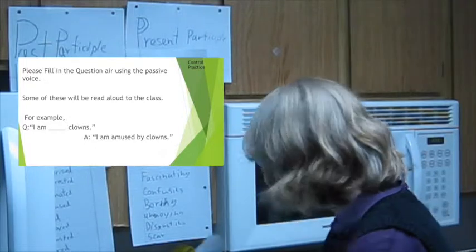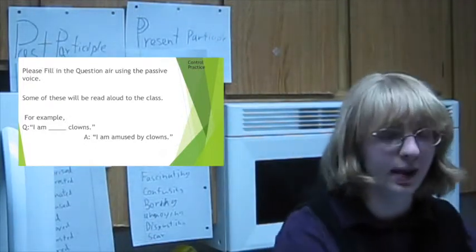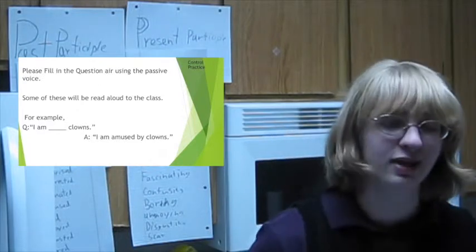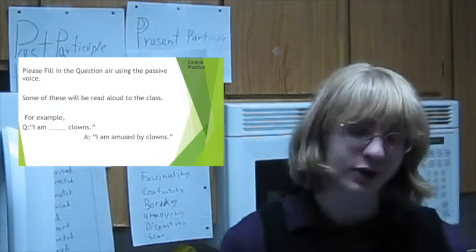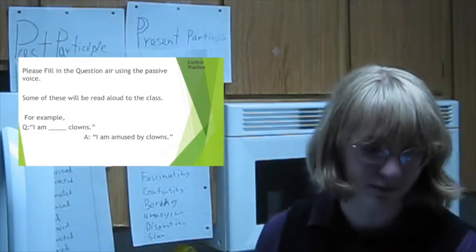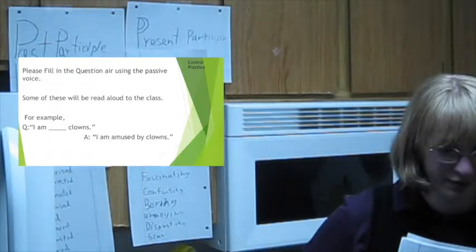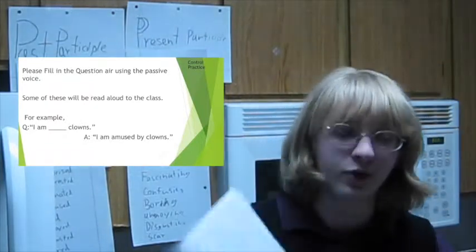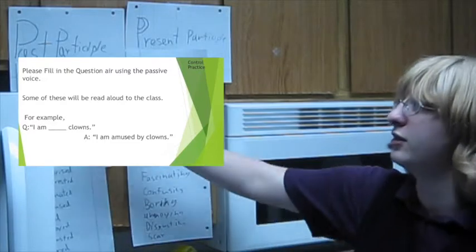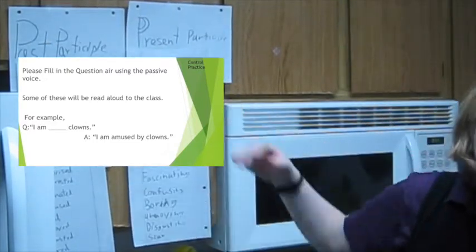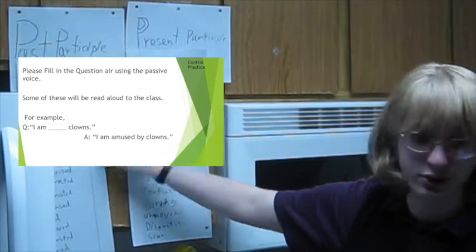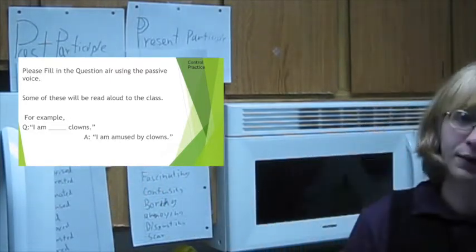So I am going to hand out these questionnaires to you all. Please fill them out using the passive voice. These questionnaires will be read by our classmates, so I'm just warning you in advance. For example, one of the questions is, I am blank clowns. I am amused by clowns. For answering the questionnaire, for filling in the blanks of the sentence, describe your own feelings about these items using either the past participle or the present participle adjectives. You can use the adjectives that are written on the two columns, or you can think them up on your own. Both are fine.